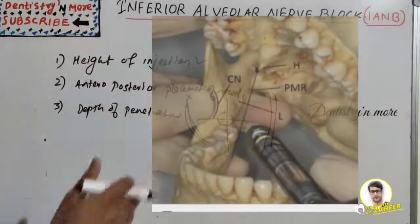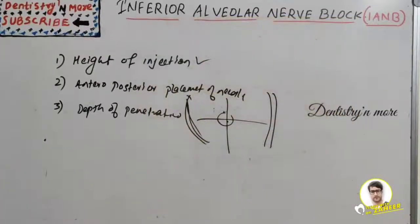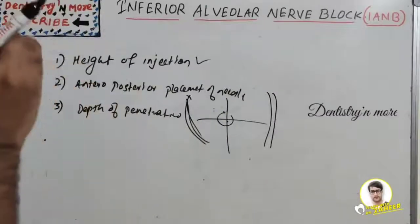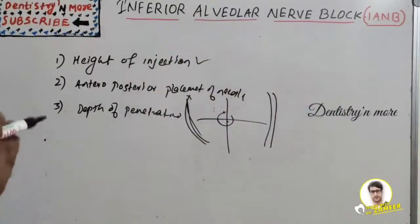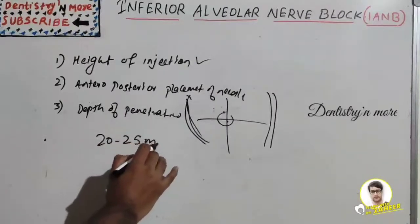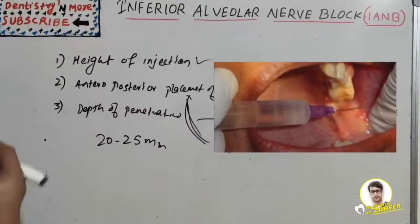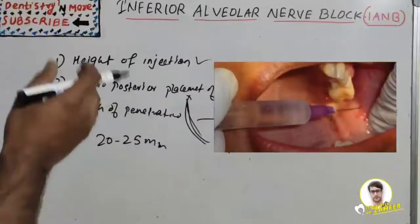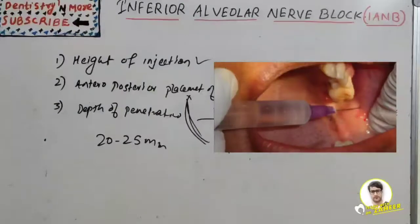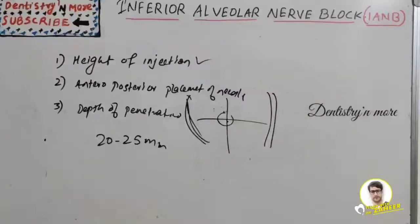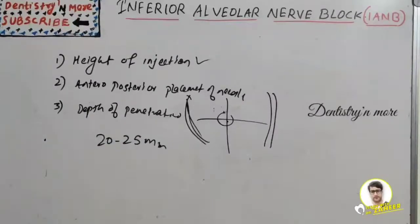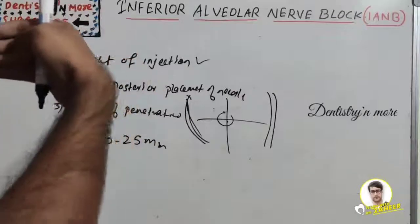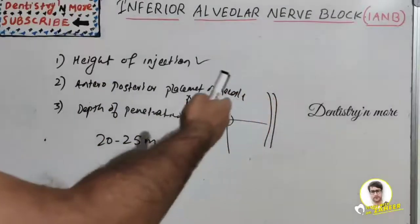The ultimate success of IANB depends on obtaining bone resistance — the needle should touch the medial side of the ramus of the mandible. The average depth of penetration to bony contact is approximately 20 to 25 millimeters, which is about two-thirds to three-fourths the length of the long dental needle. If bone is contacted at less than half the needle length, the needle tip is located too anteriorly on the ramus.